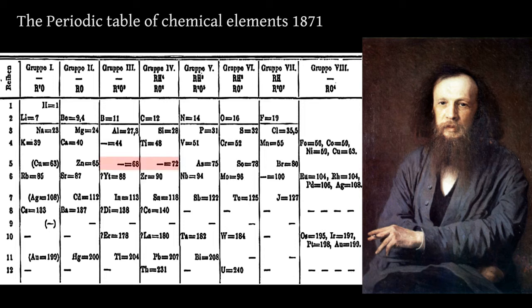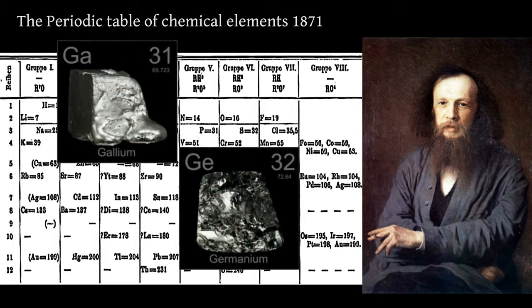So he predicted some elements which were unknown. For example, he predicted the properties of those missing elements, such as gallium and germanium, which were discovered soon.